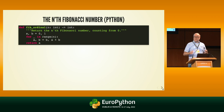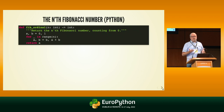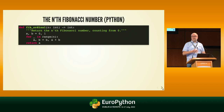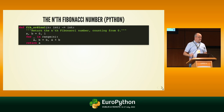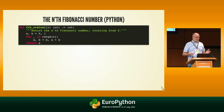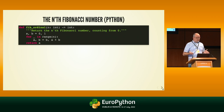To trace through the logic: if you pass n equals zero as the index, A and B are initialized to zero and one. The range function causes no iteration, so A and B remain the same, and you return A, which is zero — Fibonacci number at index zero. If you pass one, the loop executes once, A gets the old B value of one, and you return one — which is indeed Fibonacci number at index one.